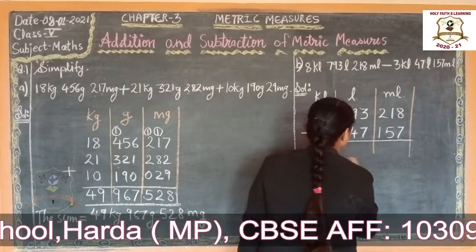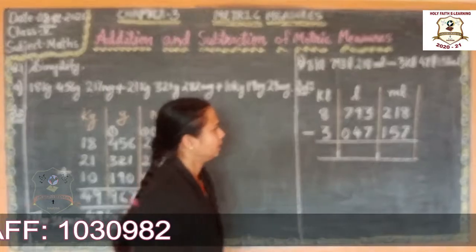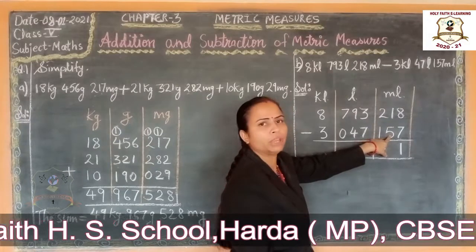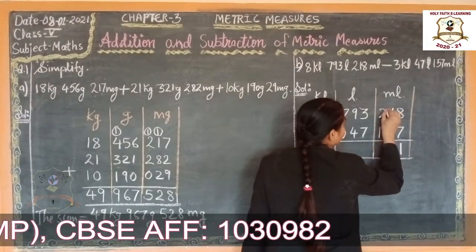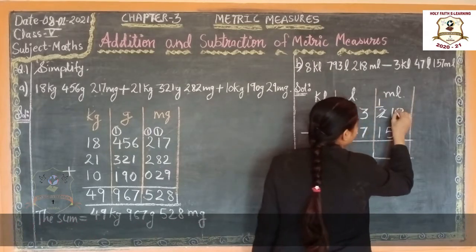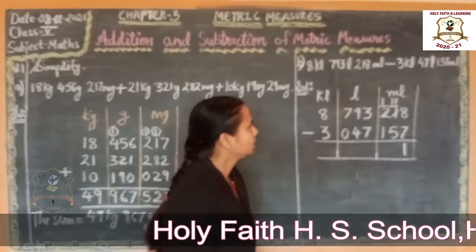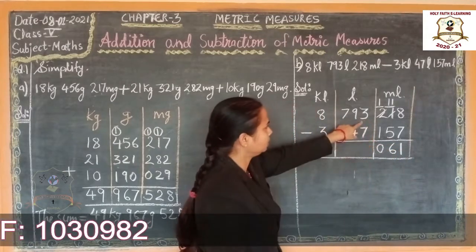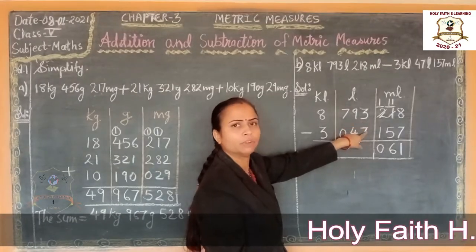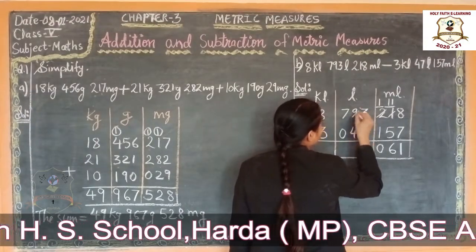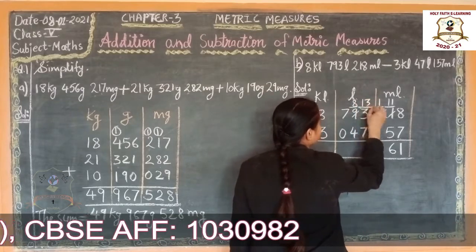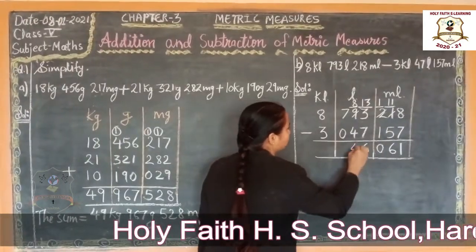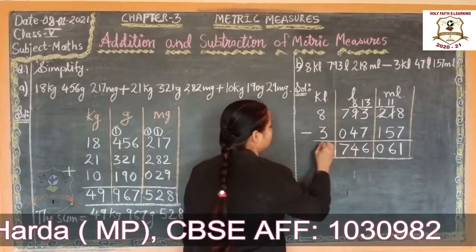Now see students. Start from here. 8 minus 7, 1. See, we cannot subtract 5 from 1. So we borrow from 2. 2 is reduced to 1 and 1 come here. It will become 11. Now 11 minus 5, 6. 1 minus 1, 0. Now here 3 and here 7. We cannot subtract 7 from 3. So we borrow from 9. 9 gives to 8. 1 come here. So it will become 13. Now 30 minus 7, 6. 8 minus 4, 4. 7 minus 0, 7. 8 minus 3, 5.